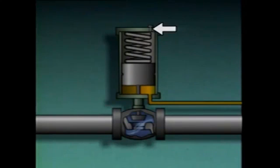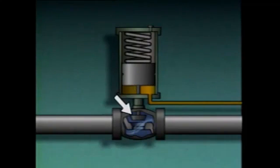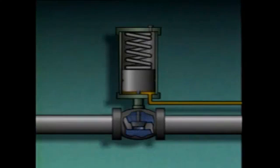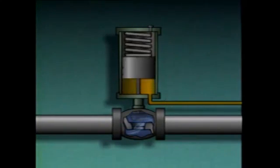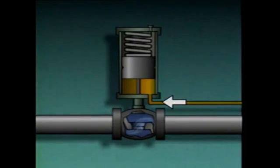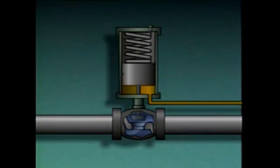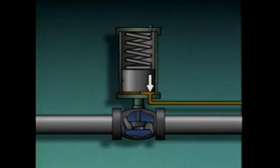A hydraulic actuator consists of a cylinder, a fluid port at the base, a vent, a spring, a piston, and a piston rod connected to the valve disc. When there is no fluid pressure against the piston, the spring keeps the piston at its lowest position and the valve is closed. When fluid flows through the port into the cylinder, the piston moves upward, compresses the spring, and opens the valve. Air above the piston is exhausted through the vent. When fluid flow stops, fluid pressure and the spring hold the piston and valve at their new positions.